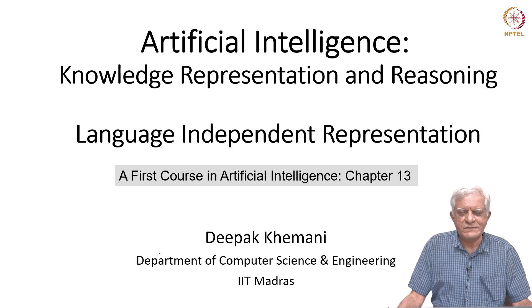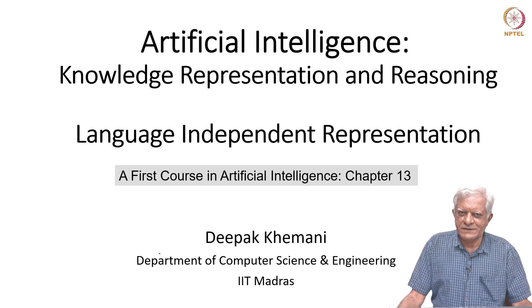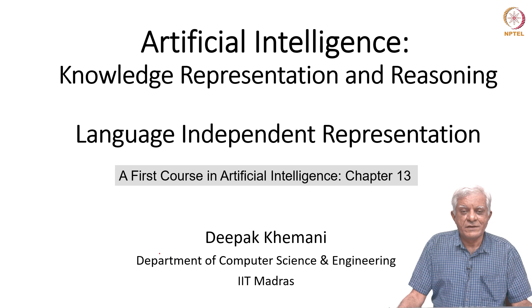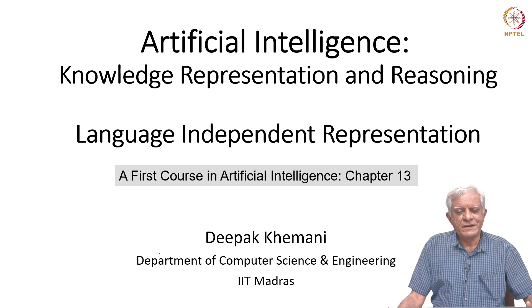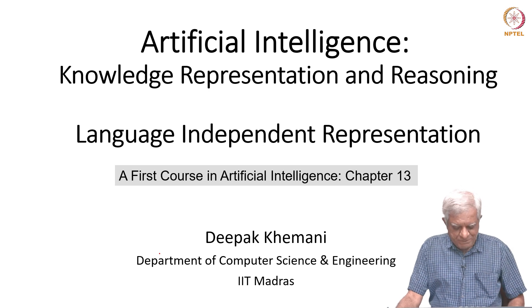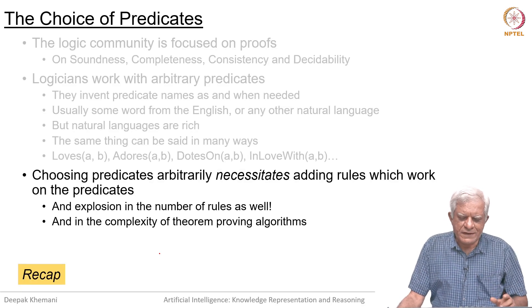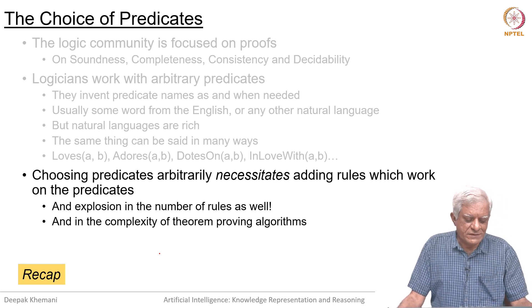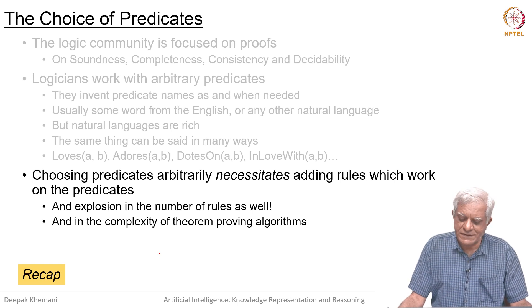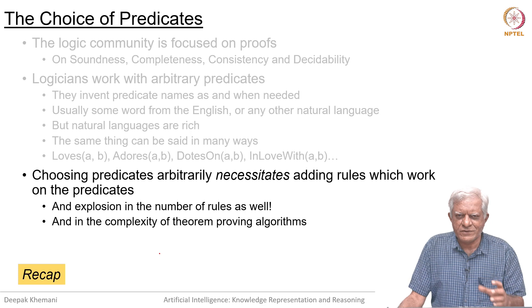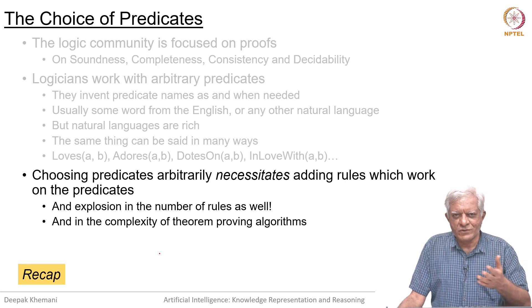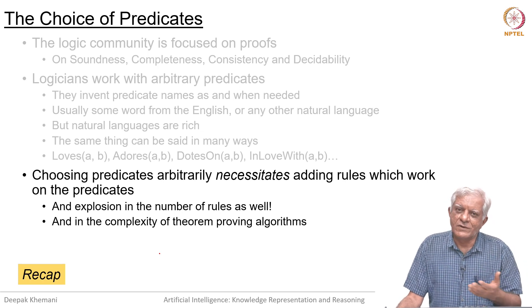We have said often during this course that the choice of predicates is a very important thing, and that is a matter which logicians do not bother about too much because they are more concerned with theorem proving strategies. Whereas from the knowledge representation point of view, the choice of predicates is very important. Choosing predicates arbitrarily necessitates adding rules which work with the predicates, because if you are going to add predicates to your knowledge base, the only use the predicates can have is if there are rules operating upon them which allow you to make inferences with them.